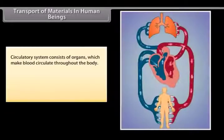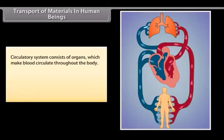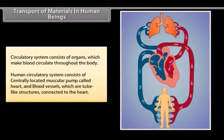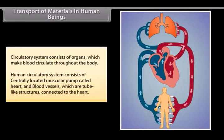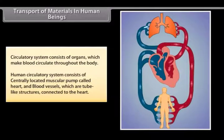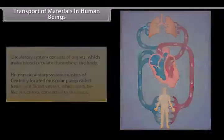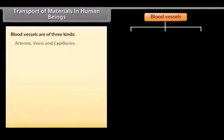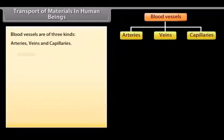The circulatory system consists of organs which make blood circulate throughout the body. The human circulatory system consists of a centrally located muscular pump called the heart and blood vessels, which are tube-like structures connected to the heart. Blood vessels are of three kinds: arteries, veins and capillaries.